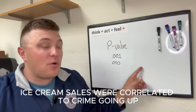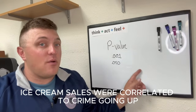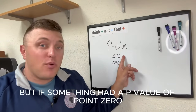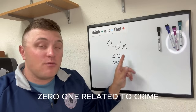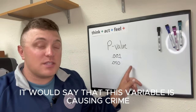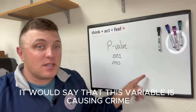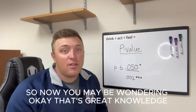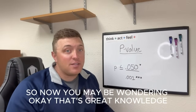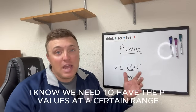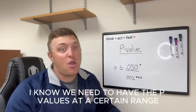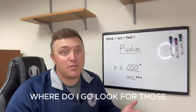To bring p-value and statistical significance to relevancy — p-value is saying that something is causing an outcome to happen, versus just correlation like the ice cream sales example. Ice cream sales were correlated to crime going up, but if something had a p-value of 0.001 related to crime, it would say that this variable is actually causing crime. So now you may be wondering: where do I go to look for those p-values?